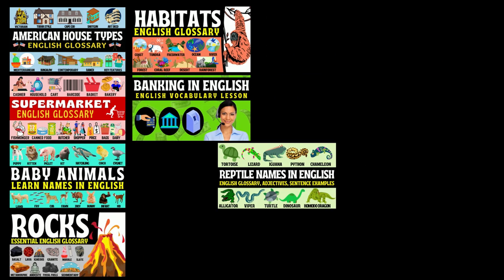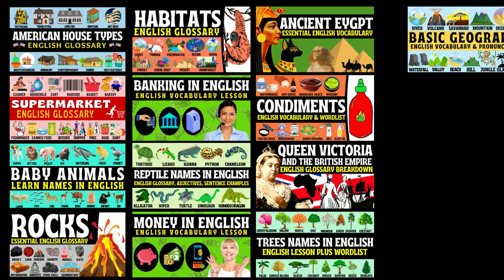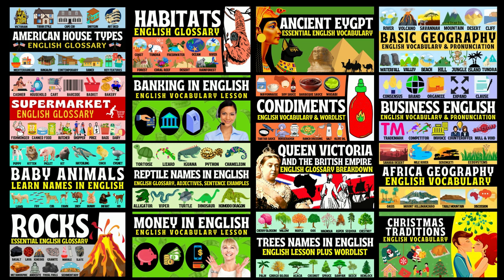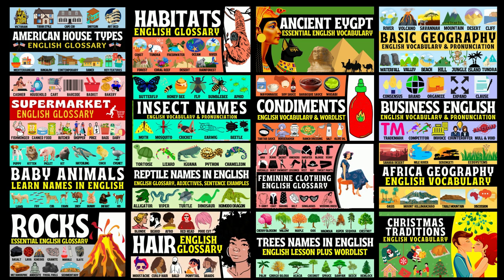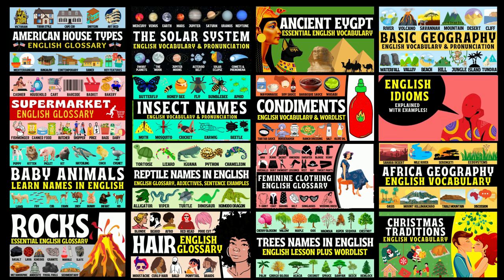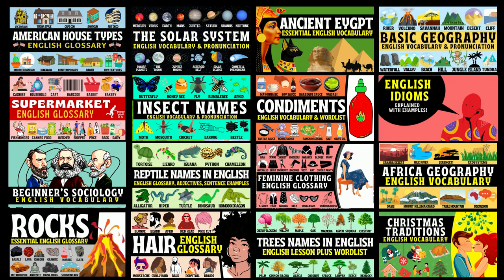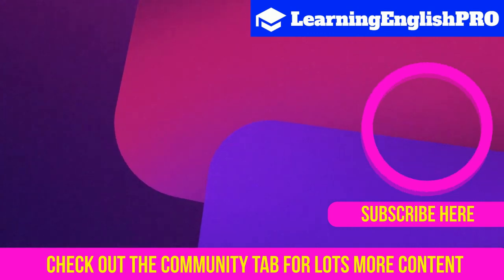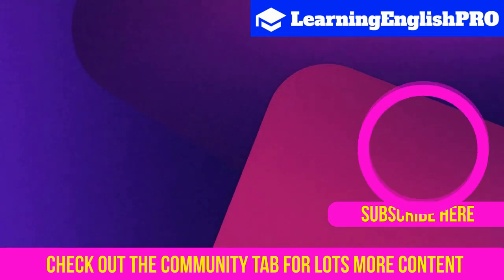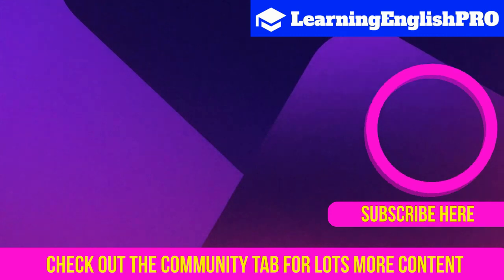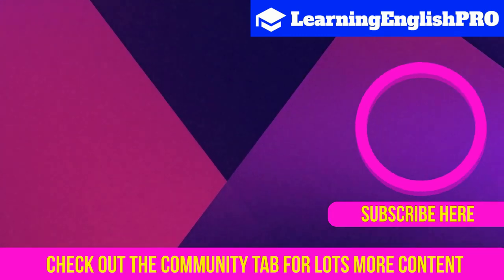And that brings us to the end of this English vocabulary lesson on streets and roads. Don't forget to check out the extensive word list in the description below. If you have a passion for English vocabulary and language, head over to my YouTube channel where you'll find a wealth of resources to help you learn vocabulary on a range of interesting topics. If you can't find what you're looking for, let me know in the comments and I'll be happy to make a video for you. Hit subscribe to stay updated on all my latest English lessons. I hope you have a fantastic day and remember, keep learning English like a pro.